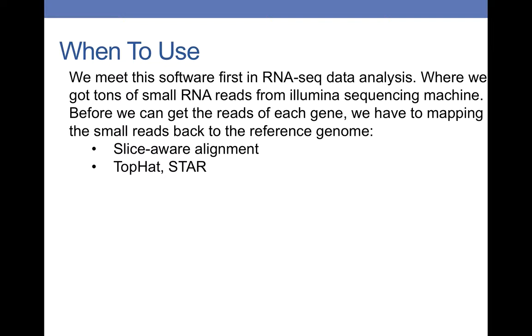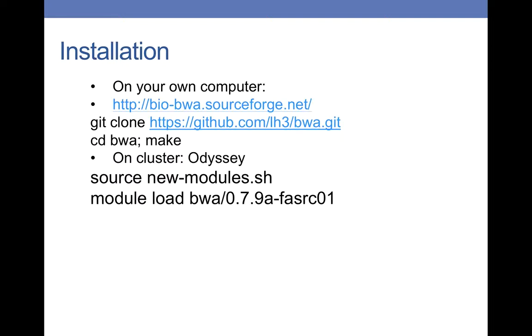When to use BWA? We meet this software first in RNA-seq data analysis where we got tons of small RNA reads from Illumina sequencing machine. Before we can get the reads of each gene, we have to map the small reads back to the reference genome so that we can count the frequency of each. Similar software are TopHat and STAR.